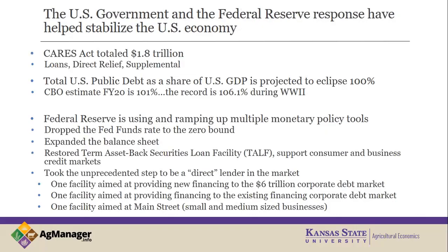On fiscal aid, the US government has provided a number of programs — certainly quite sizable. The CARES Act was nearly $2 trillion. Just looking at total US public debt as a share of GDP, the Congressional Budget Office estimates that in FY21 we will eclipse 100% — total US debt divided by GDP will actually be above that 100% mark. The only other time we were above that was during World War II when we were financing the wartime effort.